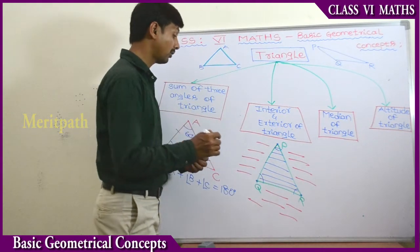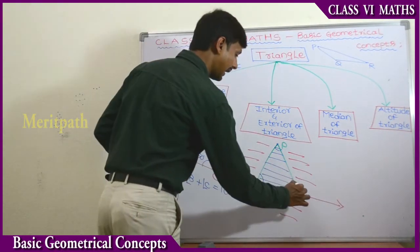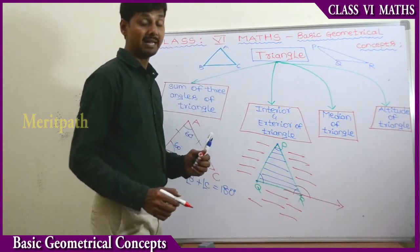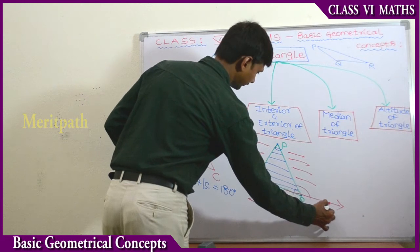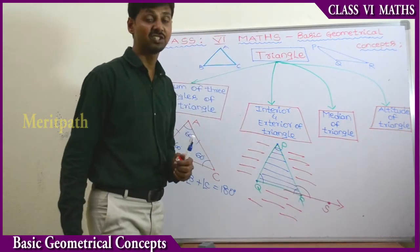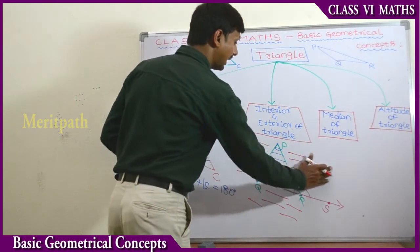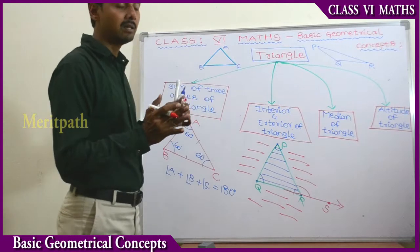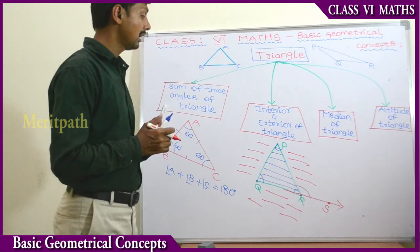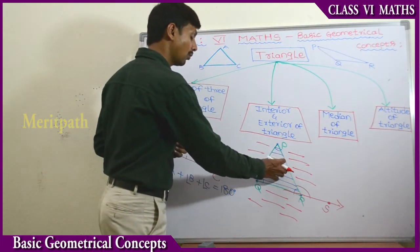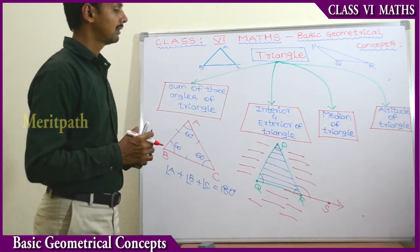And if we extend the line segment QR, an exterior angle will be formed. We take a point S on the extended line. Angle PRS is the exterior angle of the triangle. The region outside the triangle is the Exterior of the triangle, and the region inside is the Interior of the triangle.